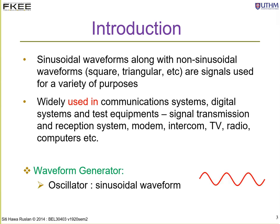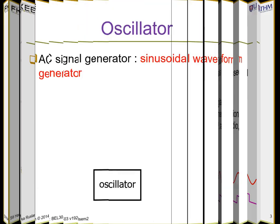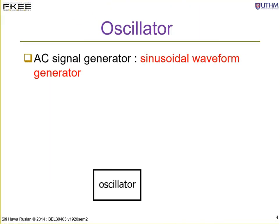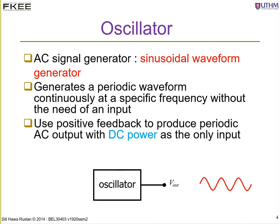We'll talk about two types of waveform generators: an oscillator for sinusoidal waveforms, and a square waveform generator which we call a multivibrator. An oscillator, also called an AC signal generator, generates a periodic sinusoidal waveform with no external input other than a DC power supply.